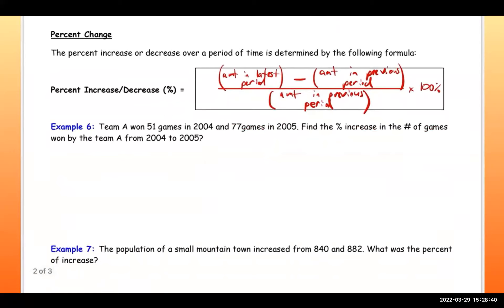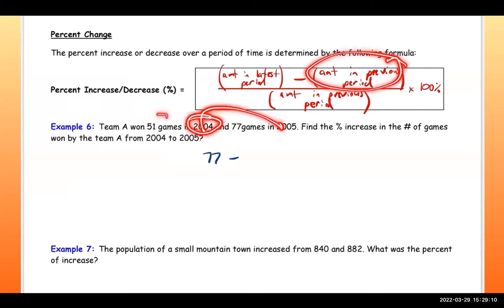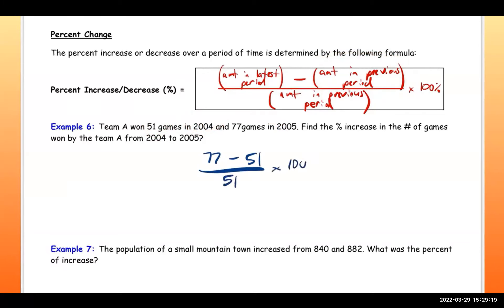Let's look at the first example: Team A won 51 games in 2004 and 77 games in 2005. Find the percent increase from 2004 to 2005. The amount in the latest period is 77, minus the amount in the previous period — 51 — divided by 51, the previous period amount. Then multiply by 100 and add the percent symbol.